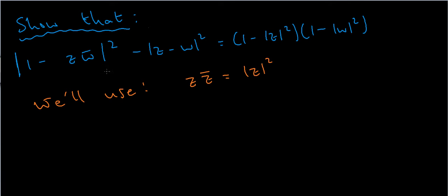To prove this we're going to use the fact that z times its conjugate — so any complex number times the conjugate of that complex number — is just the absolute value of that complex number squared.